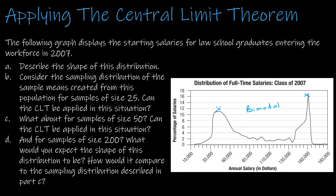Question B asks: if we're looking at the sampling distribution of sample means created from this population for samples of size 25, can we use the central limit theorem? The answer is no. Remember, the requirement is either that the population is nearly normal, or that n is greater than or equal to 30. Neither condition is met here — the population is bimodal, not normal, and n = 25 < 30. So I cannot use the central limit theorem.